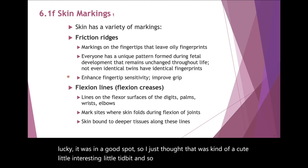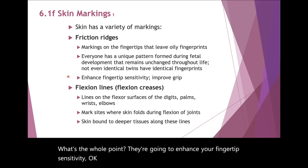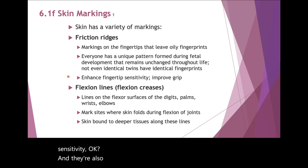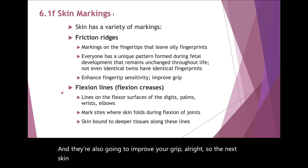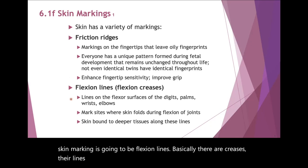What do those ridges do? They're going to enhance your fingertip sensitivity and also improve your grip. The next skin marking is going to be flexion lines — basically creases and lines on the surfaces of the digits, the palms, wrists, and elbows. These markings are found where the skin folds during flexion of those joints, and that skin is bound even deeper to the deeper tissues along those lines.